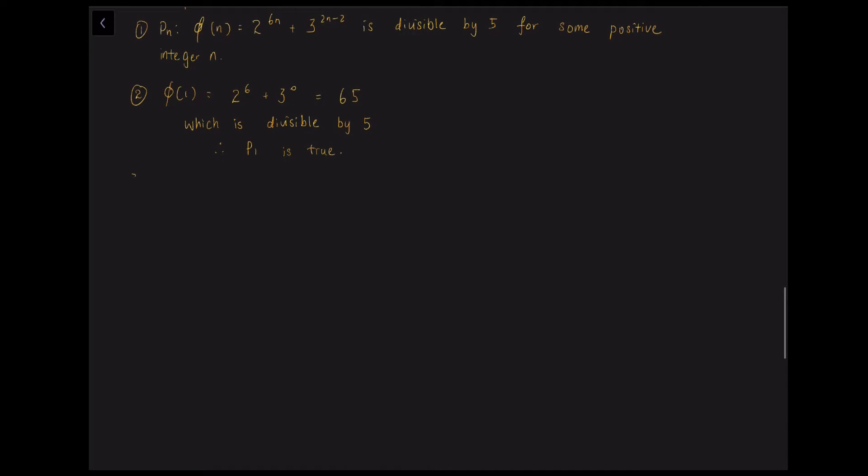And now the third step, we want to assume that pk is true. And the fourth step, let us try the addition method. So phi k plus 1 plus gamma phi k equals